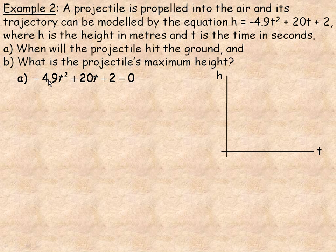For any quadratic equation, I like to start with a positive coefficient, so I'm going to multiply everything by negative 1. Notice all the signs change. This is an equivalent quadratic equation with the same roots as the original, but starts with a positive coefficient: 4.9t squared minus 20t minus 2 equals 0.